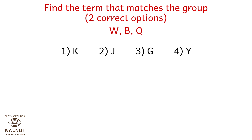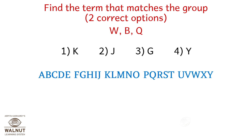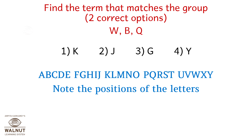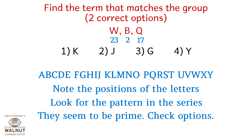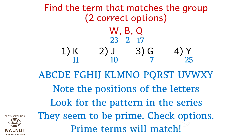Find the term that matches the group: W, B, Q. There are two correct options. The series is given below. Note the positions: W is 23, B is 2, Q is 17. Look for a pattern — they seem to be prime numbers. So let's check the options. 11 and 7 are matching. We want to find the terms that match, not the odd ones — be careful. The answer is K and G, options 1 and 3.